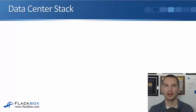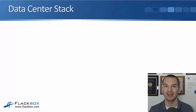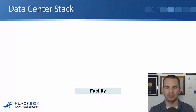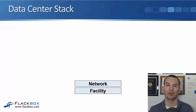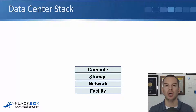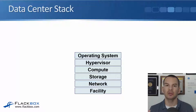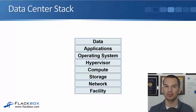To figure out where the customer and provider responsibility is, we need to understand what the different levels are first — the data center stack. At the bottom, we have the actual facility: the building, the power, the cooling, and security staff. On top of that, we have the network infrastructure hardware, then the storage infrastructure hardware, the compute hardware which is the physical servers, then the hypervisor — the software that runs on top of those physical servers. On top of the hypervisor, we have the virtual machine operating systems, then the applications, and finally the data.